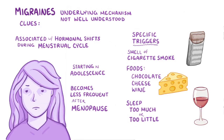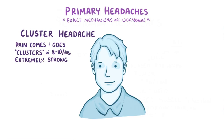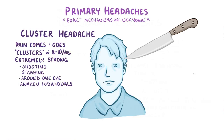Finally, there are cluster headaches, where headache pain comes and goes, sometimes in clusters of 8 or 10 in a day. The pain is extremely strong — a shooting or stabbing pain usually around one eye that can even awaken individuals from sleep. They usually happen at the same time each day or night, so they're sometimes called alarm clock headaches.